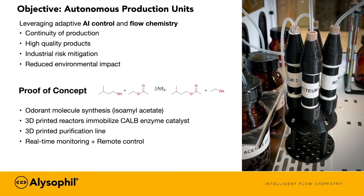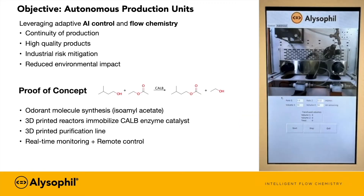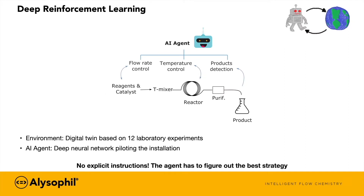We have built a proof of concept microfactory for isoamyl acetate synthesis. We have 3D printed reactors and a purification line, and we have provided real-time monitoring and remote control. To study autonomous piloting feasibility, we use deep reinforcement learning. The agent interacts with the environment and receives rewards for every action. Our AI agent is able to observe product conversion while controlling flow rate and reactor temperature. We have built an environment which is a digital twin based on laboratory experiments. Now our agent receives no explicit instruction — it has to figure out the best strategy on its own.